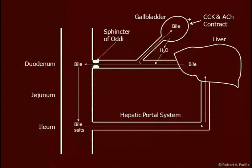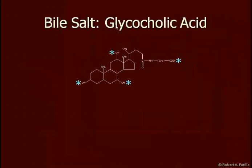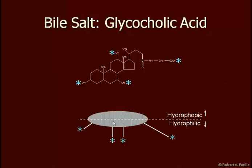Here's a bile salt — this is glycocholic acid. It's made up of cholesterol, and in this case glycine is attached to it. Also, taurine can be attached as taurocholic acid. You also find deoxyglycochoic acid and deoxytaurocholic acid. I've marked the hydrophilic regions with blue stars, and if we turn it on its side, we'll see that the hydrophilic regions all face in one direction, leaving the other side to be hydrophobic.